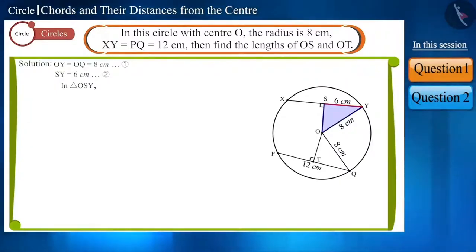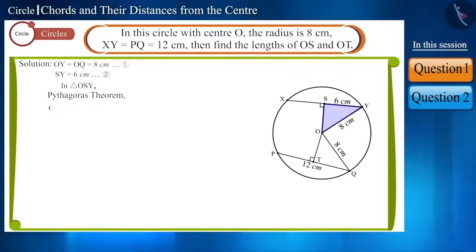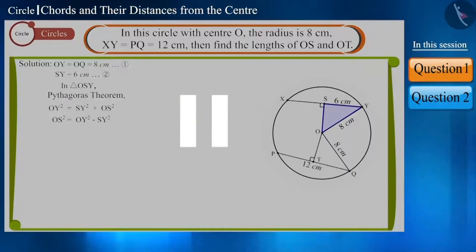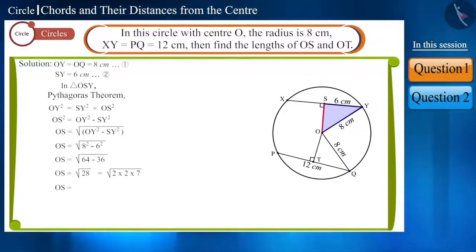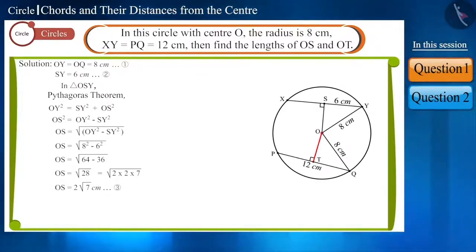Friends, look at the figure carefully. Triangle OSY is a right-angled triangle, and we know the length of side SY and the hypotenuse OY. Using the Pythagoras theorem, we can easily find the length of OS. Pause the video and try yourself. We obtain the length of OS as 2√7 cm.